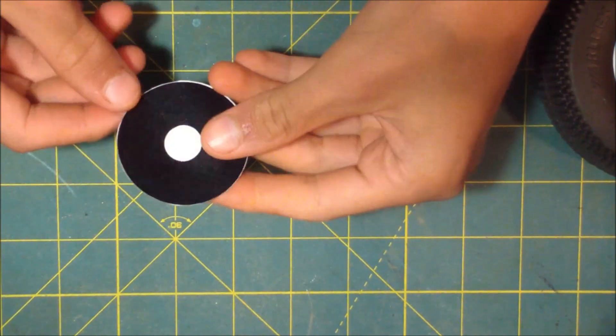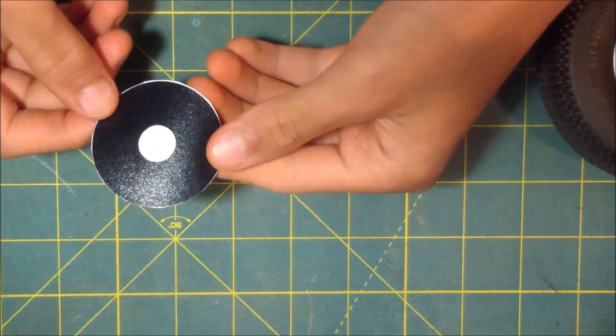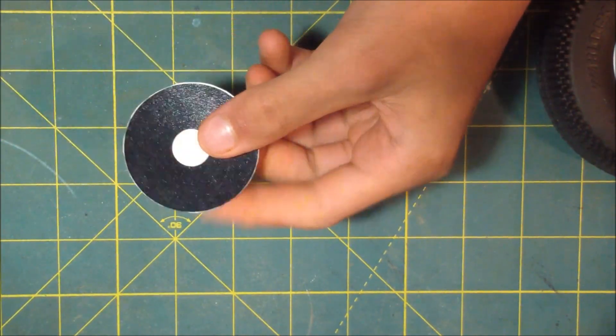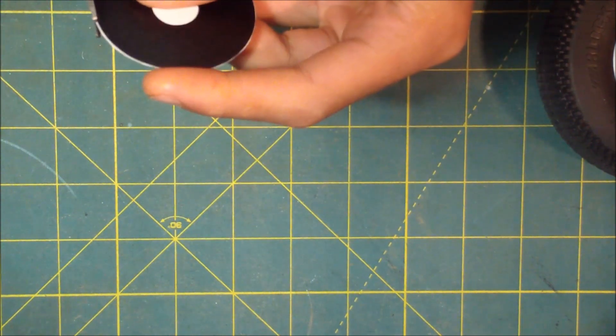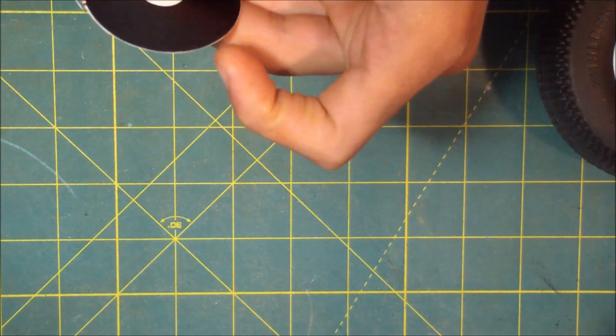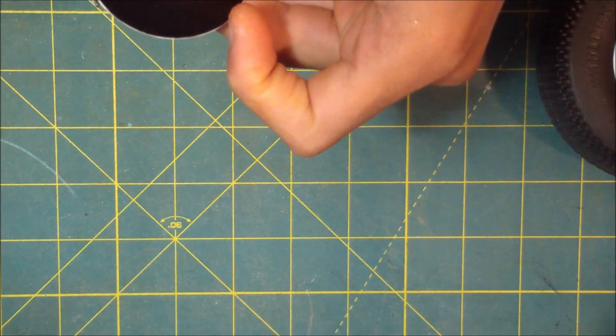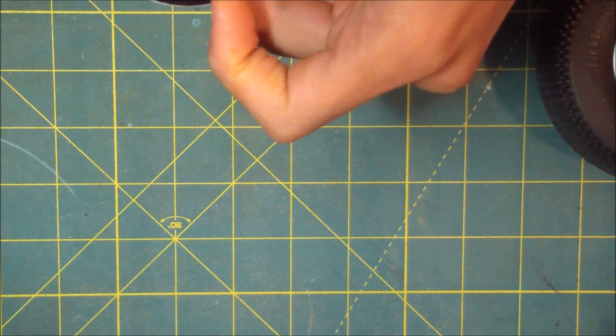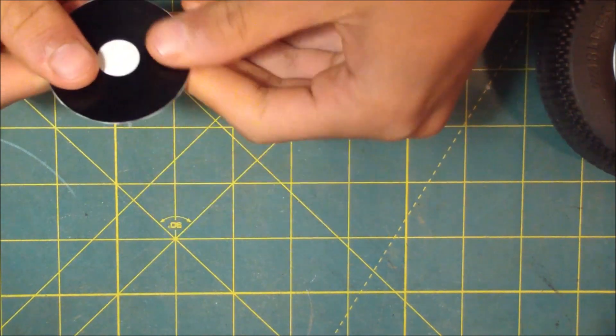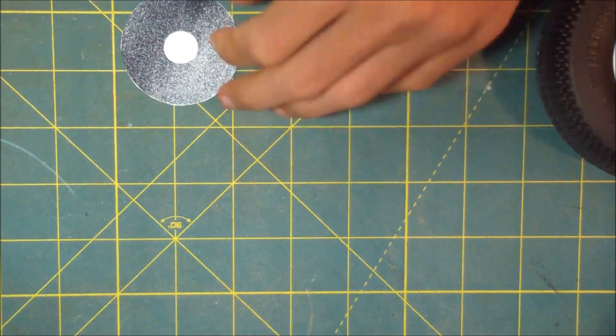Once you've got the outline cut out, when you're doing that, make sure you're cutting as close as you can to the black so you're not leaving too much white around the edge, so you can fit in there and not leave any bubbles. So now when you've got the outside cut out, you can cut out the center.